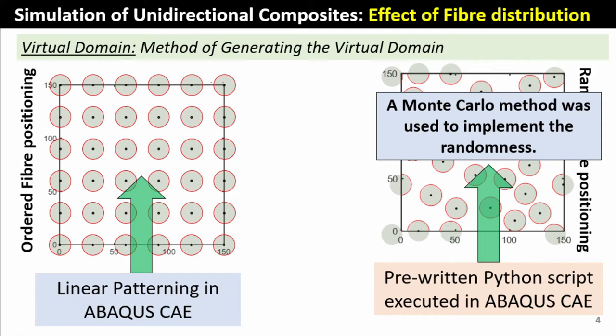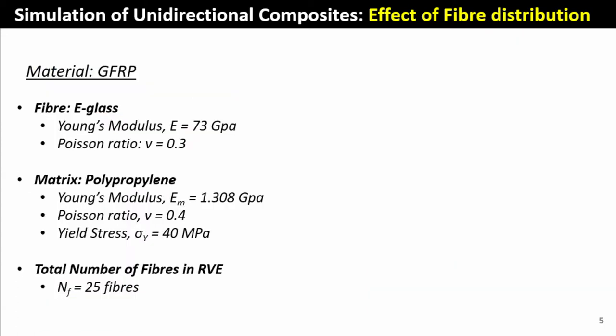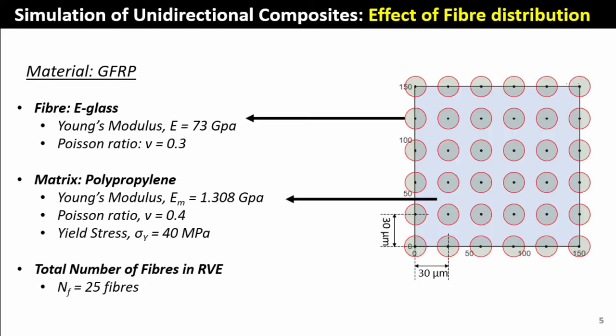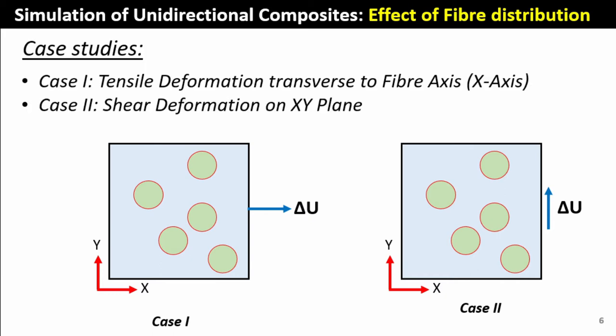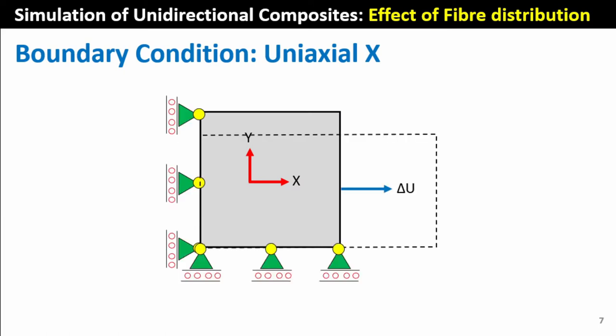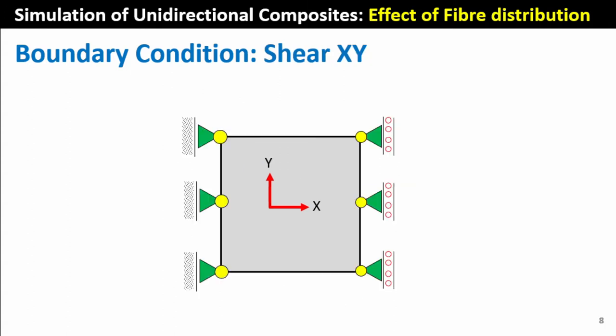The Python scripts will be linked in the comment section. The material we're using is glass fiber reinforced plastic with a Young's modulus of 73 GPa. The polypropylene matrix properties are also specified. The number of fibers needed to meet the 35% volume fraction requirement is 65 fibers. Two case studies will be examined: a tensile deformation along the fiber axis (X direction) and a shear case in the XY plane, with respective boundary conditions for each loading scenario.